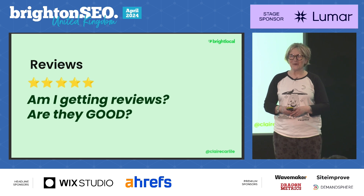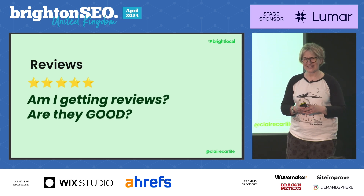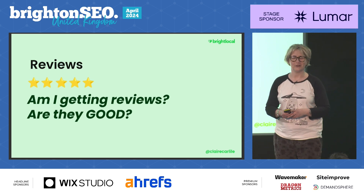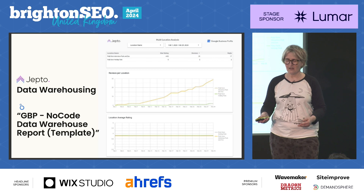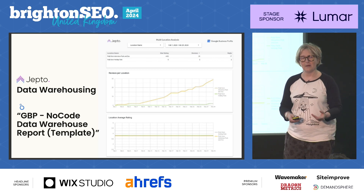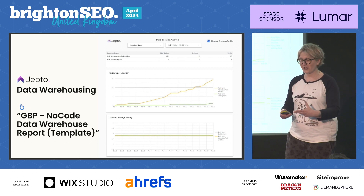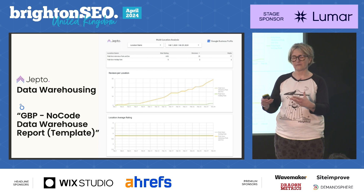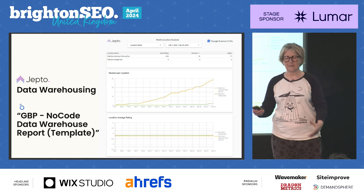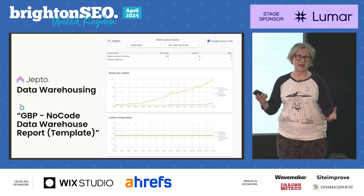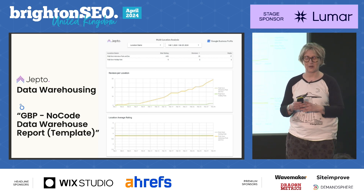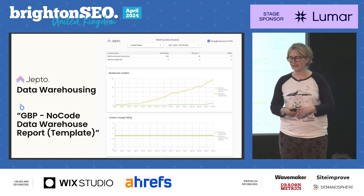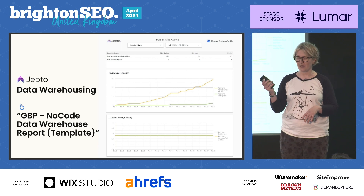Reviews — people want to know: am I getting reviews and are they good? We look at things like review count and average rating. I like to use Jepto, which has a really good Looker Studio template. It's a data warehouse for all your data from the API, and then you can pull that data down and slice and dice it in any way you want. It's a really good framework for looking at multi-location.